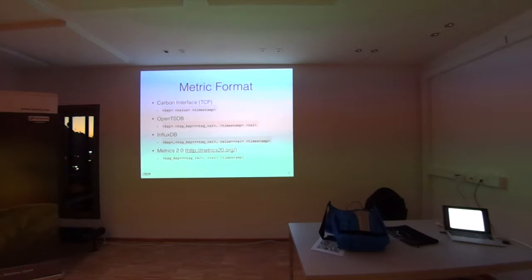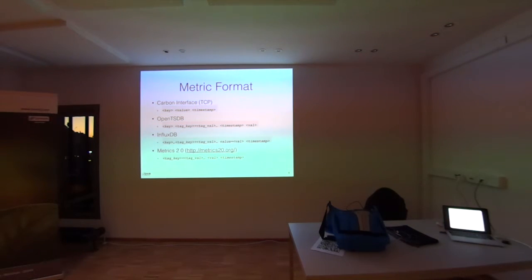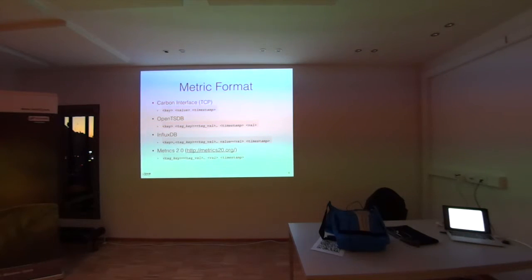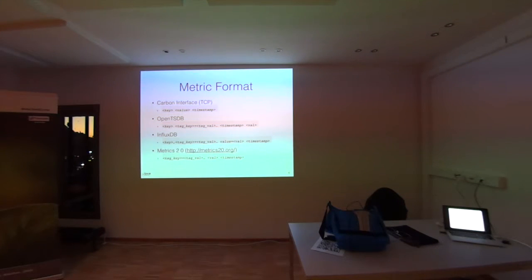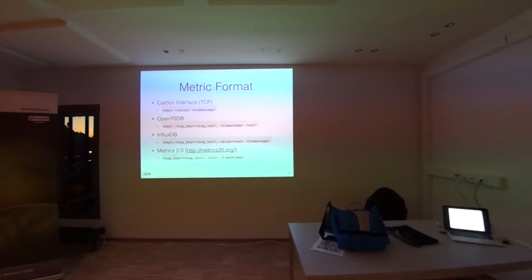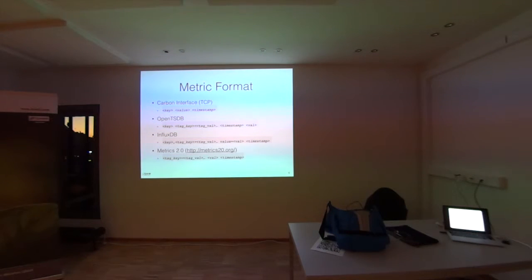The carbon interface, which is maybe the parent of all the other interfaces or formats, is very simple: key, value, timestamp. The key is a dot-notated path — it could be system.cpu.usage or system. The value is a float or an integer, and the timestamp is just an epoch, a Unix timestamp. OpenTSDB and InfluxDB have similar formats: they have a key as well, and then you can annotate different tags. For instance, the key could be CPU usage and the tag might be the host and the datacenter it's in, or the main application of the server. This makes searching easy.